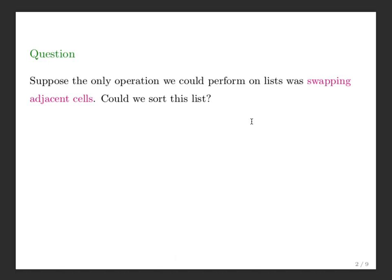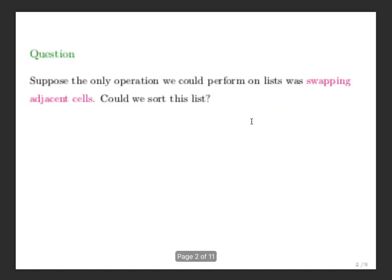So we did selection sort the other day. Selection sort is the one where we just repeatedly find the largest element in the list and then put that element at the back.